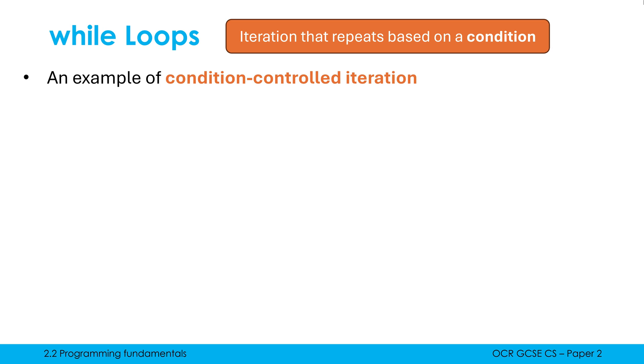Well, this is where we have iteration that repeats based on a condition. A condition needs to be boolean. It's either true or false. And we repeat either based on that condition being true or that condition being false. And in the case of a while loop, it runs if the condition is true. A do until loop runs if the condition is false. So there are different ways of approaching this type of iteration.